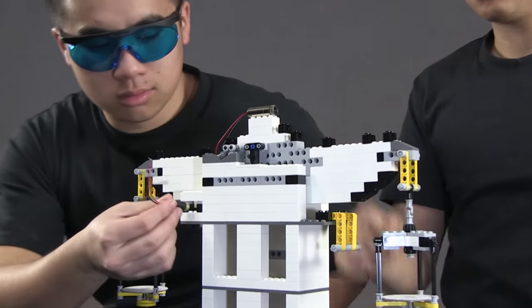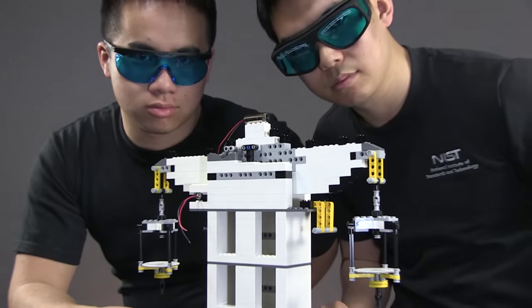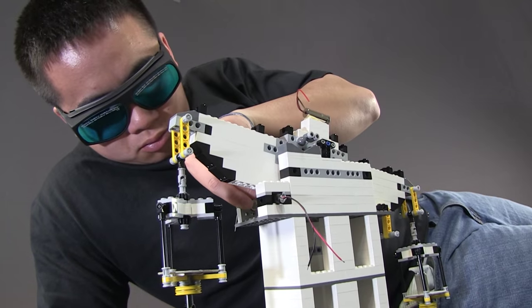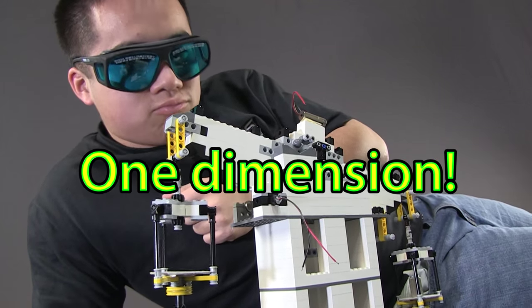Next, mount your two laser pointers here and here with a light-sensitive sensor here. No need for guesswork. These lasers will let you track the balance beam's motion in one dimension. One dimension!